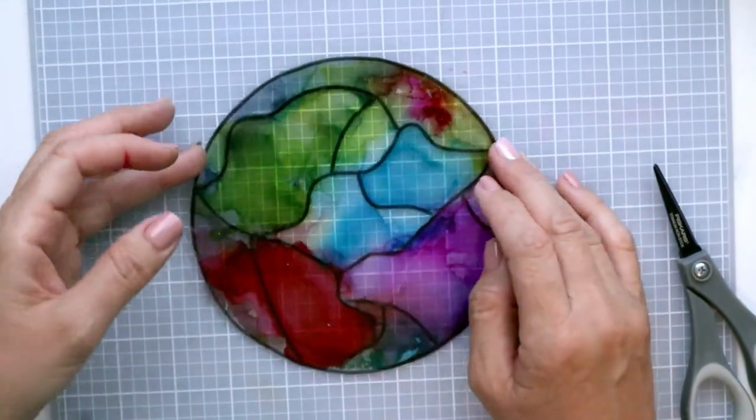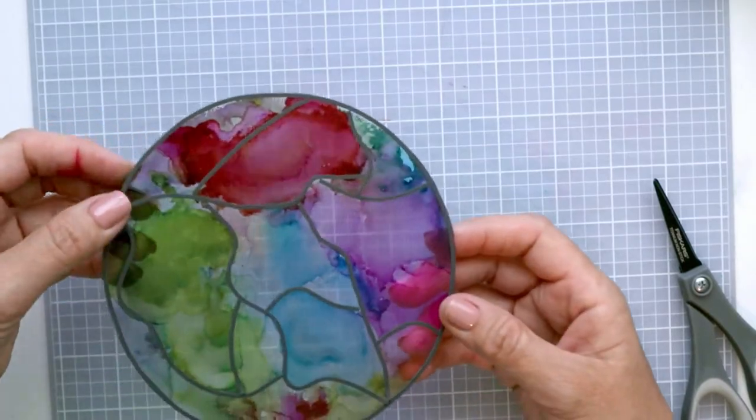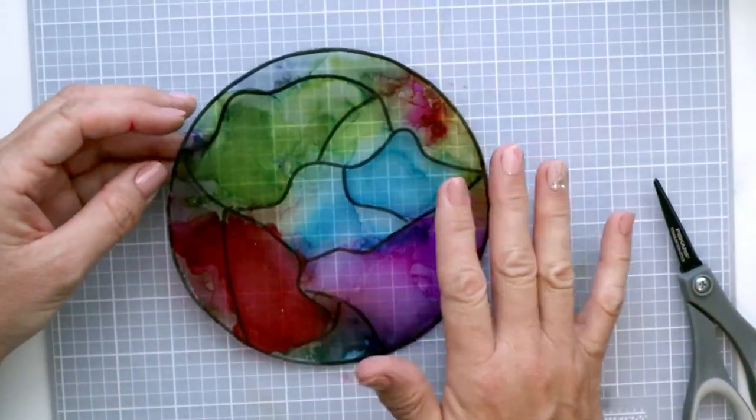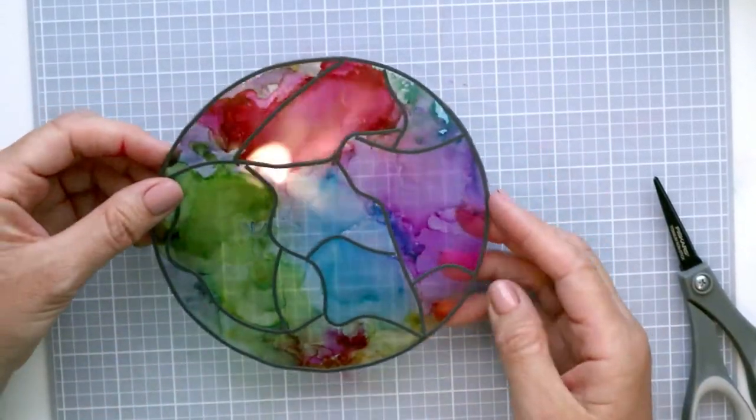Now the backside is the part that we did the alcohol on. You can spray this if you'd like. I'm just going to leave it.